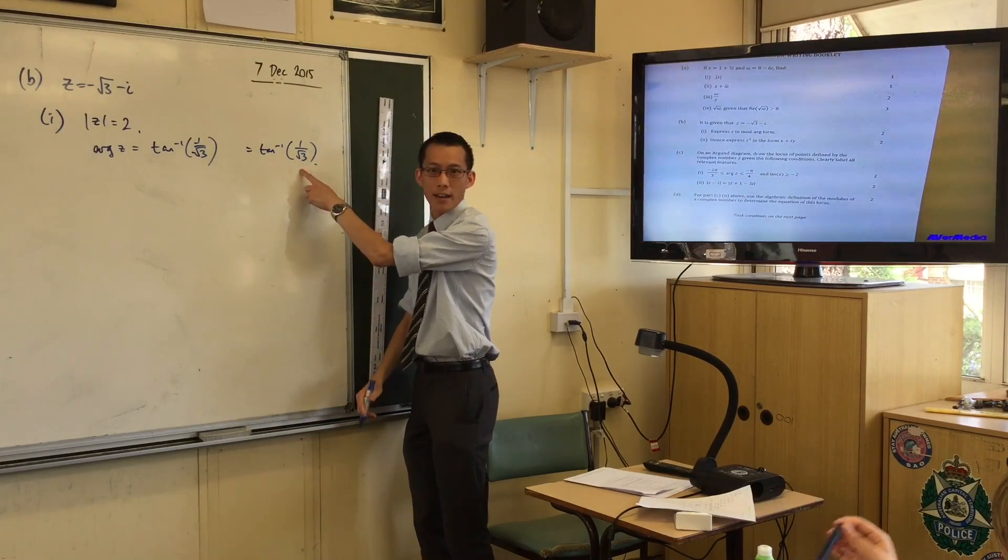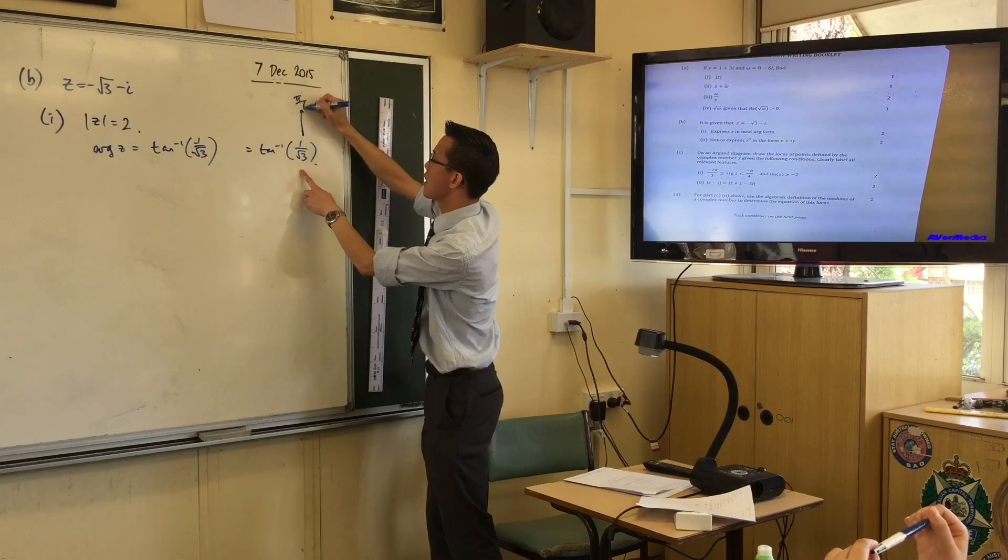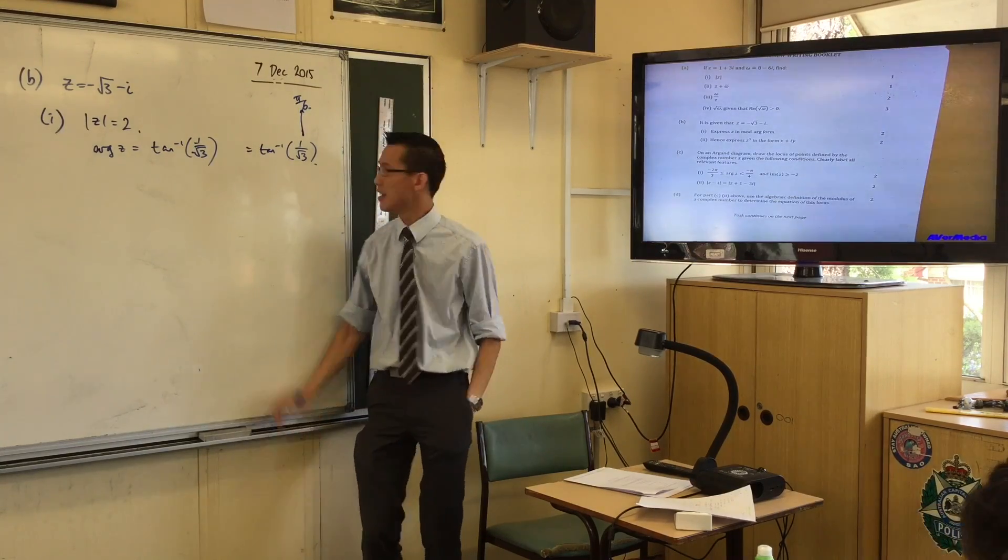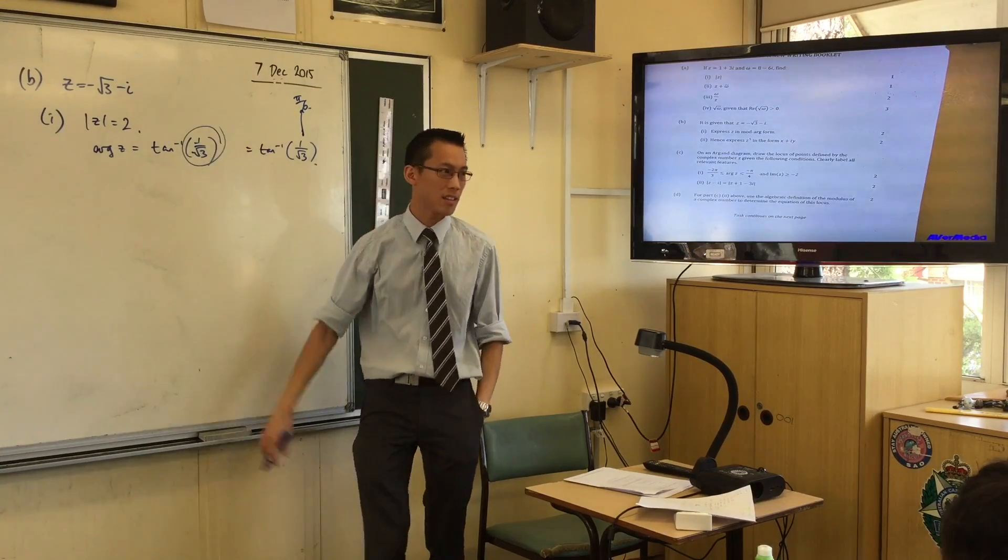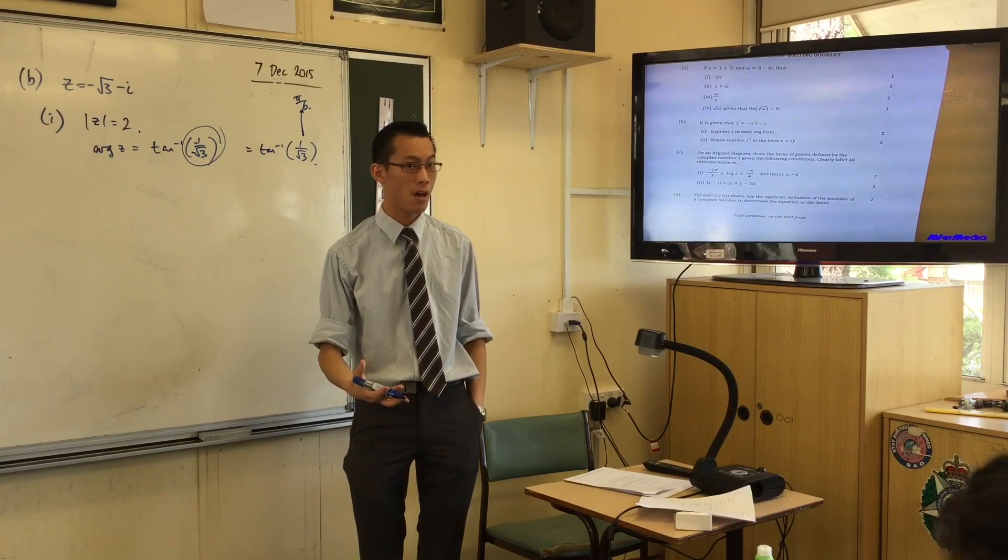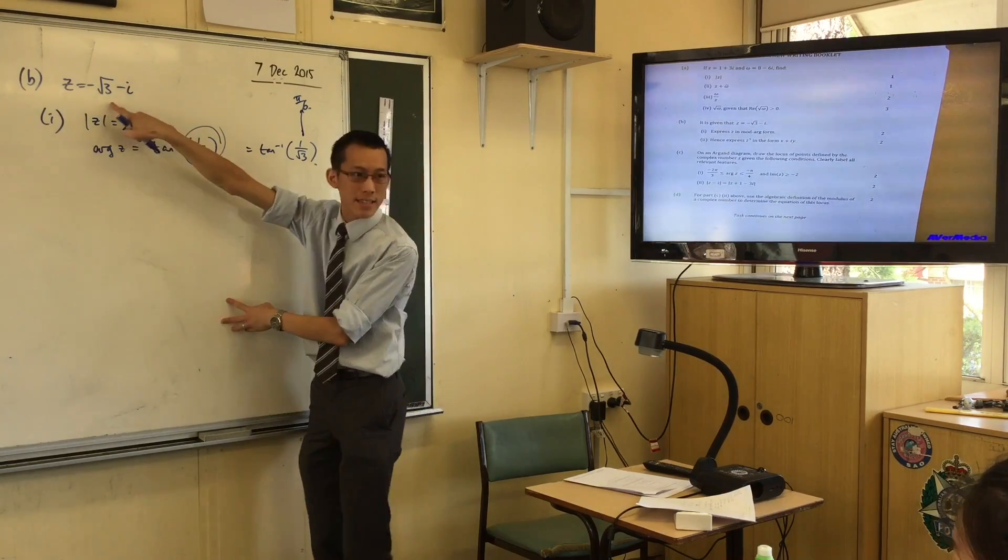So where's this guy? This guy's in the first quadrant. That's where you get your pi on 6 from, okay? But this is not in the first quadrant. It's in the third quadrant,